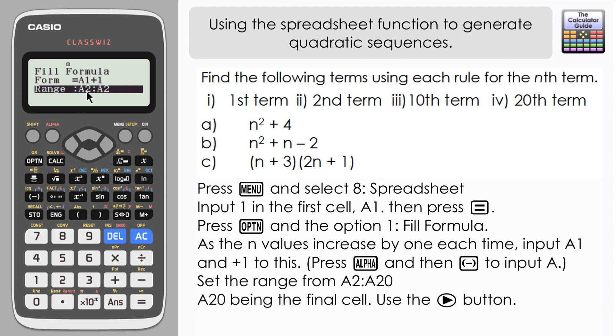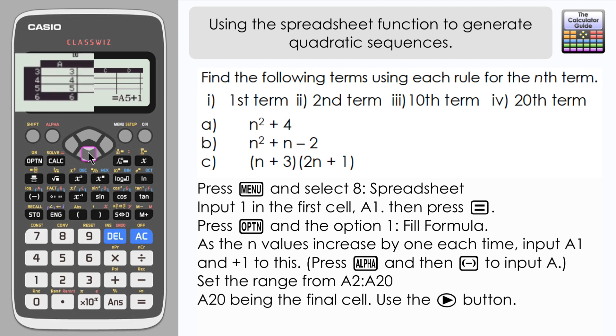Now I need to set the range. Well the first cell that I clicked in there was A2, so I want to keep that. I'm just going to navigate right to change this to the last cell I want to fill the formula in. And because I want 20 terms, that's going to be A20, so I'm just going to change that to 20 and press equals. Check everything's okay and press equals again.